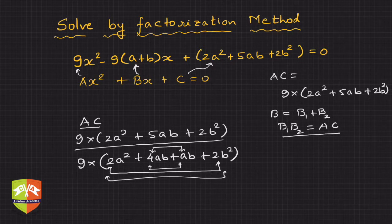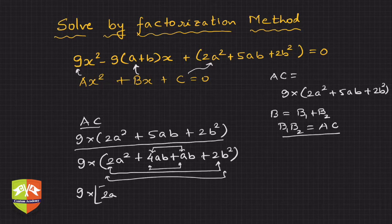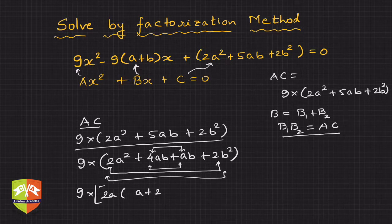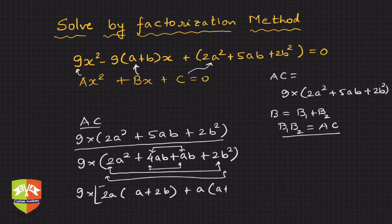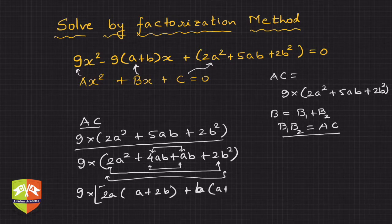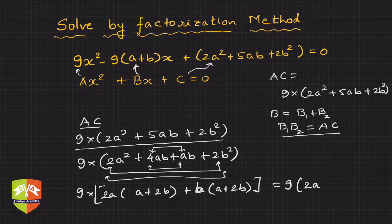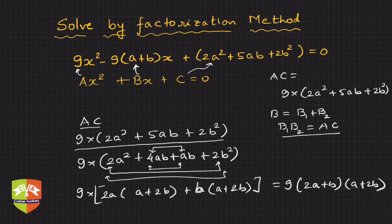So the expression becomes 9 × (2a² + 4ab + ab + 2b²). Taking 2a common from the first two terms gives 2a(a + 2b), and taking b common from the last two terms gives b(a + 2b). So the factorization is 9 × (2a + b)(a + 2b).